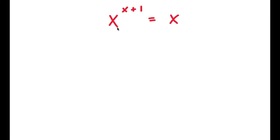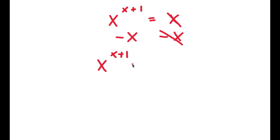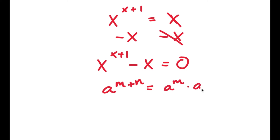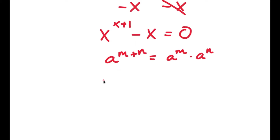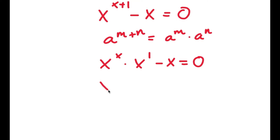In this problem, I have x to the power of x plus 1 is equal to x. To solve this, I'm going to subtract x on both sides, leaving x to the power of x plus 1 minus x equals 0. Using the exponent rule a to the power of m plus n equals a to the power of m times a to the power of n, x to the power of x plus 1 equals x to the power of x times x. Factoring out x gives x times x to the power of x minus 1 equals 0.